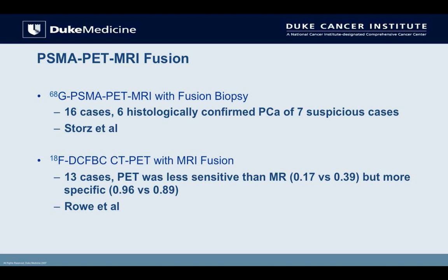Here's an example: a small study by Stortz looking at histologically confirmed prostate cancers from seven suspicious cases found cancer in six of them. In a separate study, Roe et al. looked at a different agent — 18F-DCFBC CT-PET combined with MRI fusion. They reported sensitivity decreased compared to MP-MRI, but specificity improved for higher-grade disease. These are two examples of newer molecular agents soon to be incorporated with imaging and fusion biopsy.